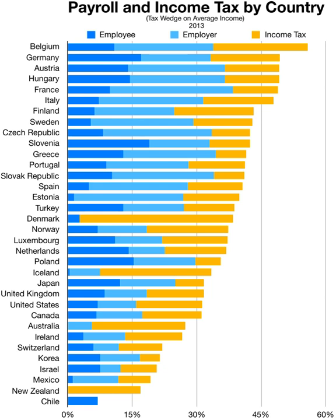One of the first recorded taxes on income was the Saladin tithe introduced by Henry II in 1188 to raise money for the Third Crusade. The tithe demanded that each layperson in England and Wales be taxed one-tenth of their personal income and movable property.